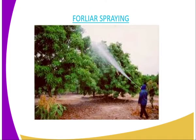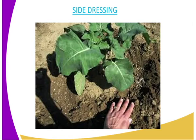The third one is foliar spraying. In foliar spraying, the fertilizer, which is soluble in water, is dissolved in water. Then we normally use a pump to apply the fertilizer on the leaves, and hence the name foliar application or foliar spraying.